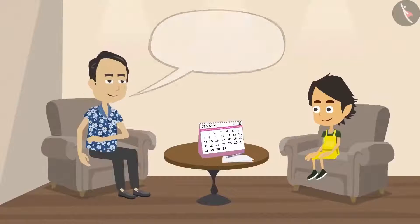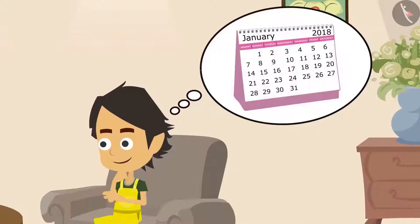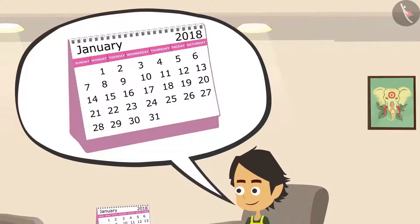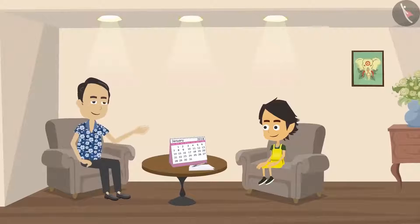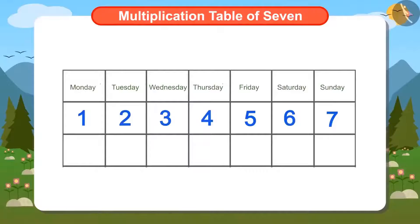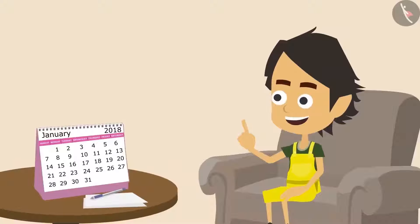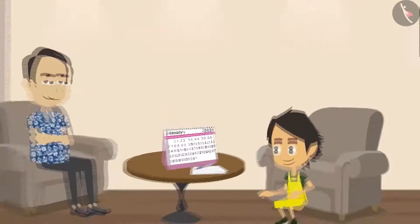Papa asks Ayushman what the date is today. Ayushman waits the whole week for Sunday, so it is easy for him to remember that today the date is 7th and the day is Sunday. Ayushman's father asks one more question: if today the date is 7th and the day is Sunday, which will be the date on next Sunday? This can be answered immediately by looking at the calendar. Thinking this, Ayushman gets up to bring the calendar.